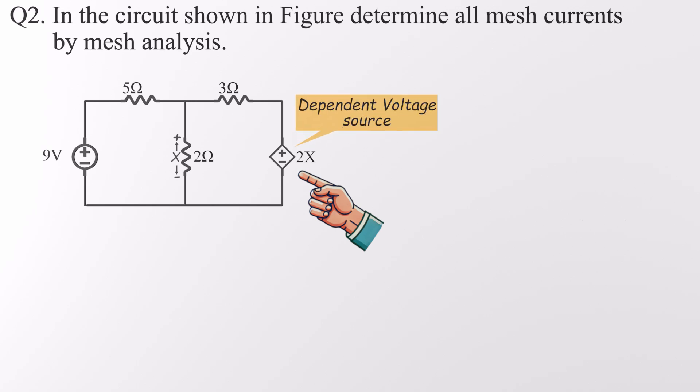Unlike an independent voltage source with a fixed voltage, a dependent source varies based on another quantity in the circuit. In this case its voltage is 2x, meaning it's exactly twice the voltage across this resistor.